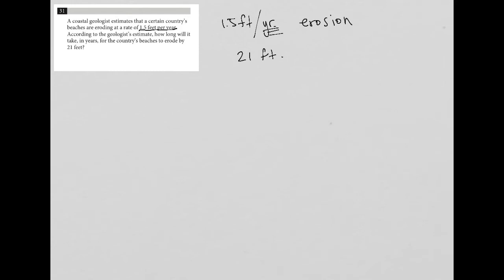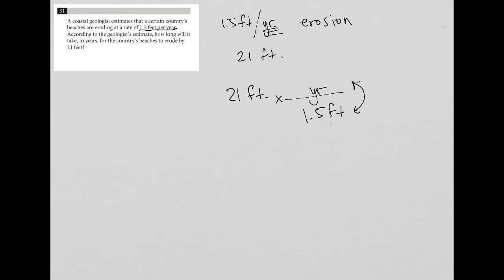So if I'm going 1.5 feet per year and I'm just trying to find the number of years, this becomes a conversion question. I have 21 feet to go and I am eroding at 1.5 feet per year. Notice how I switched the location of the numerator and denominator from how I originally had it, because I want the feet to cross out. You can always do that — it's just called a conversion factor.